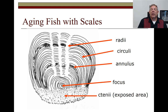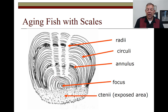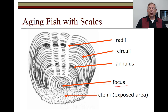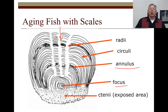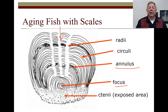We can age fish using scales. Looking at a ctenoid scale under a microscope, you see the center called the focus. Lines radiating perpendicular to the edge are called radii. Circling the focus are circuli. During colder months, the circuli grow close together and pile up, forming an annulus. By counting the annuli — like counting rings on a tree — you can tell how old the fish is.